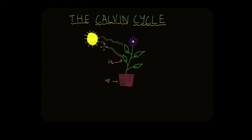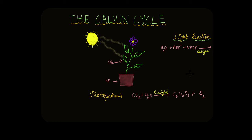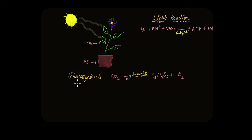Imagine you are a plant, chilling out in the sunlight, absorbing carbon dioxide through the stomatal pores, absorbing water through your roots. But then you realize you need to make food too. We all know that plants make their own food by the process of photosynthesis. Carbon dioxide and water in the presence of sunlight are used to produce glucose, the main source of energy, and oxygen is released as a by-product. Plants then use this glucose to produce energy by breaking it down.